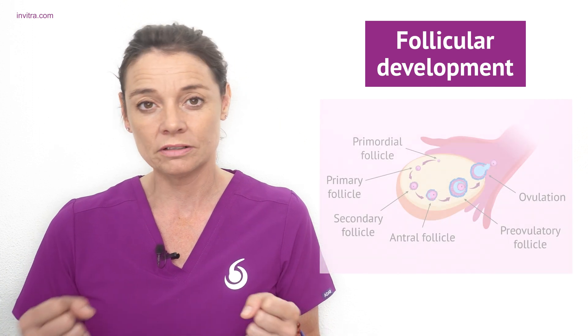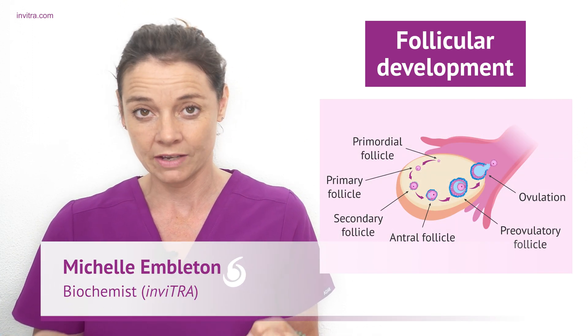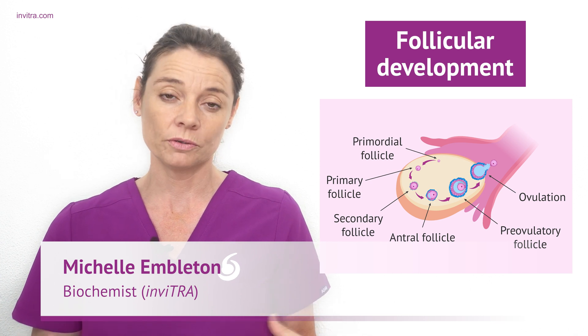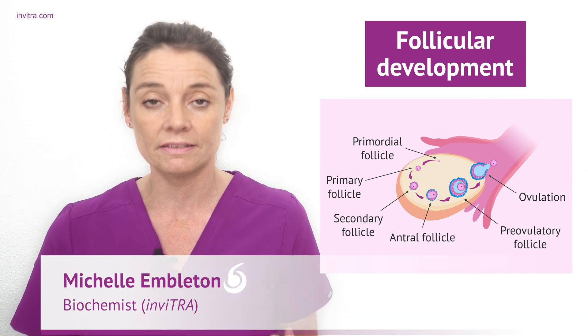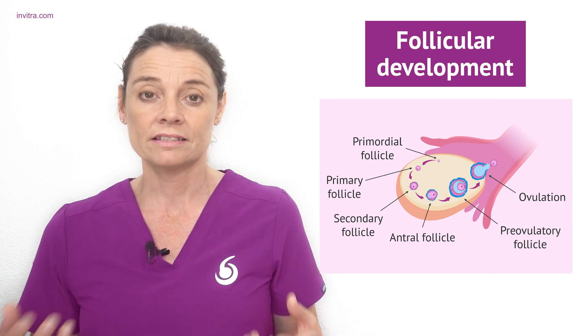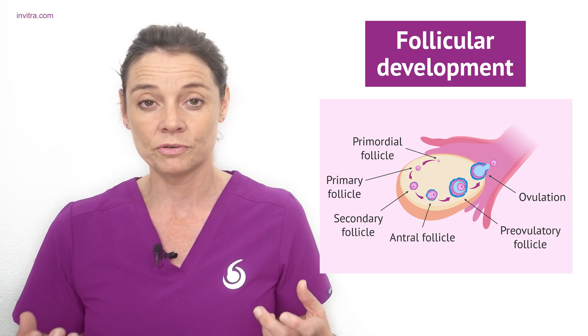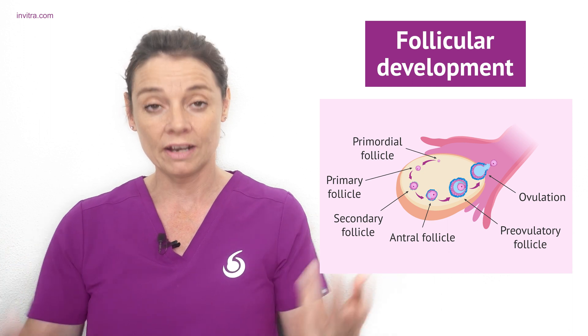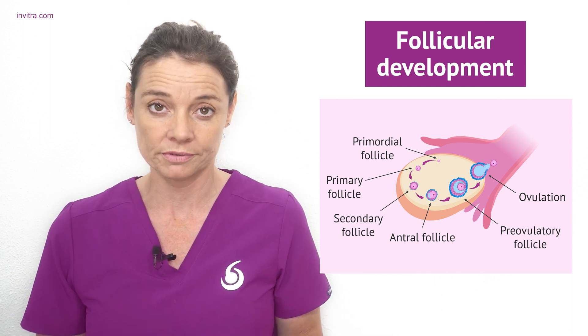Antral follicles are the ovarian follicles that still contain an immature egg inside them. However, these follicles are at a developmental stage that they are sensitive to follicle-stimulating hormone. As such, these antral follicles may develop into pre-ovulatory follicles.